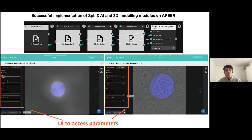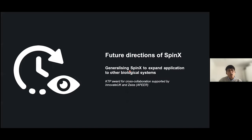We successfully implemented most components of SpinX on Apeer. These screenshots show the modeling workflow — it takes raw images and mask images — and here you can see the UI with access to the parameters needed for the SpinX AI module.